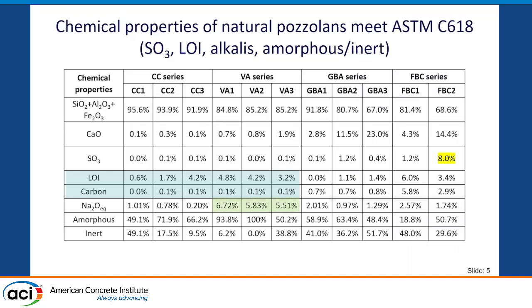The volcanic ashes have elevated alkali content — we'll discuss the availability of these later. Finally, regarding amorphous content, we see it ranges anywhere from about 15% to about 100%, so some of these pozzolans have quite a bit of crystalline material. Some of those crystals are reactive, such as anhydrite and lime, while others are non-reactive, such as quartz, feldspars, and hematite.